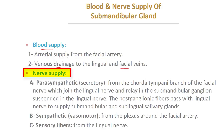The nerve supply: number one, parasympathetic or secretory motor fibers from the chorda tympani, which is a branch of the facial nerve. It joins the lingual nerve and relays in the sub-mandibular parasympathetic ganglion, which is suspended on the lingual nerve. The post-ganglionic fibers pass with the lingual nerve to supply the sub-mandibular and sub-lingual salivary glands. Sympathetic or vasomotor fibers come from the plexus around the facial artery. Sensory fibers come from the lingual nerve.